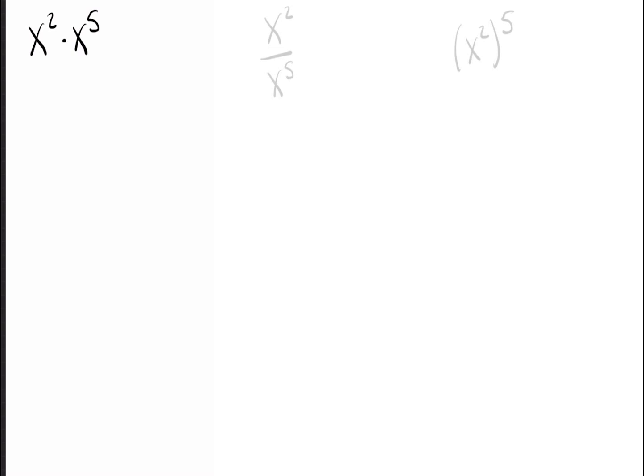The way to see what the answer is here is just to write it out. x squared means x times x. x to the fifth means five x's. One, two, three, four, five. And once you've got that, you can just see what the answer is going to be. I see I had two x's originally. I added five more x's. That's seven x's, or x to the seventh.